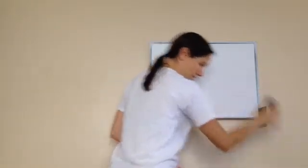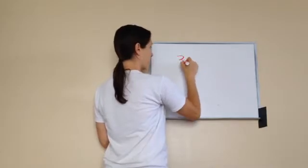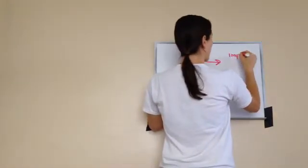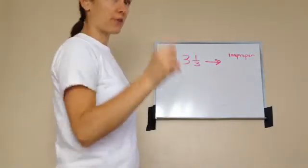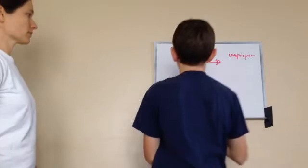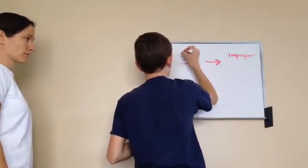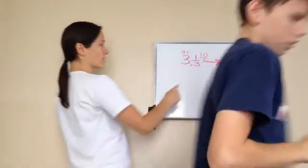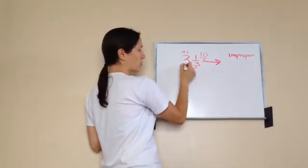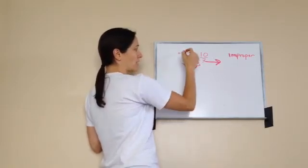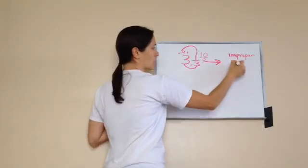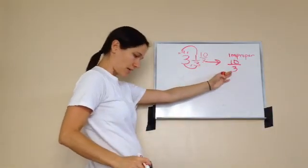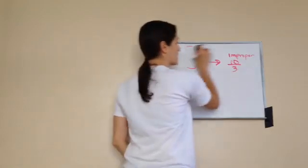Sometimes we're going to give you a mixed number — for example, 3 and 1 third — and tell you to make it into an improper fraction. That's when you would use that method. He did 3 times 3, which is 9, and wrote it up. Then he did 9 plus this 1, which gave us 10. So 10 and then you keep your denominator, giving a final answer of 10 thirds. Excellent job. And that is lesson 10. Thank you.